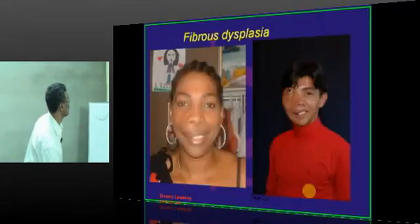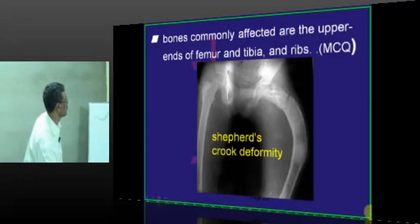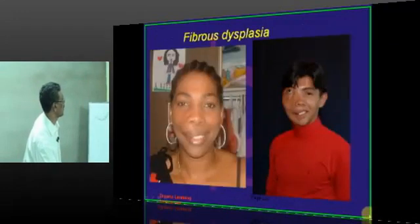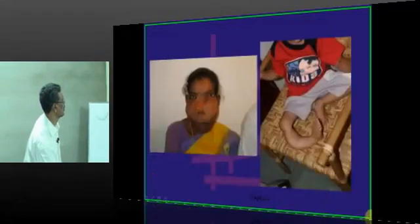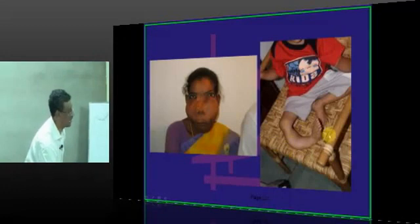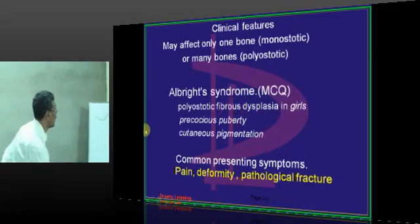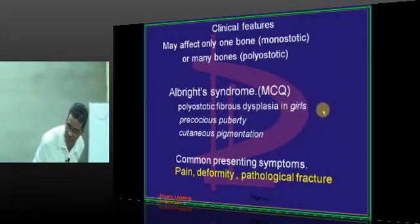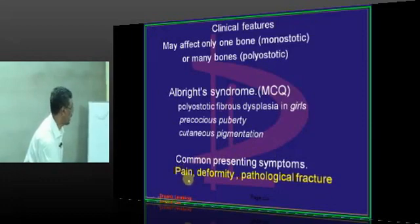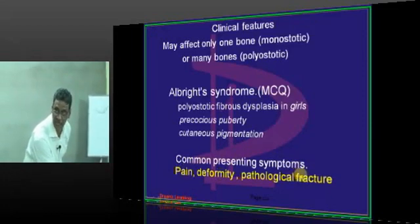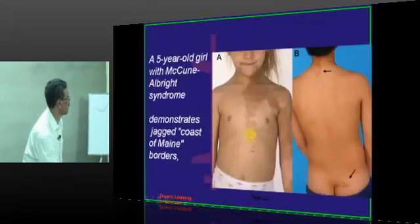The shepherd's crook deformity is typical, and fibrous dysplasia can affect various other bones. The tibia is affected in monostotic variety. In Albright syndrome — polyostotic fibrous dysplasia in girls — there is also precocious puberty and cutaneous pigmentation. The skin lesions are called coast of Maine borders. Common presentations are pain, deformity, and fracture.